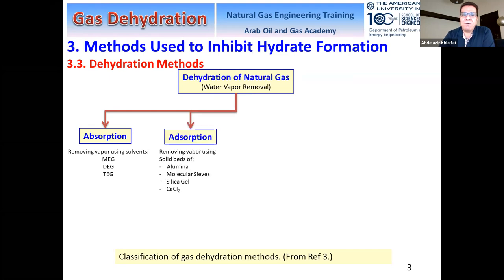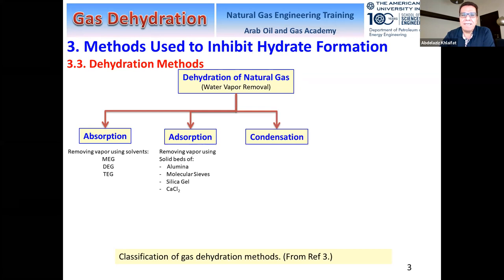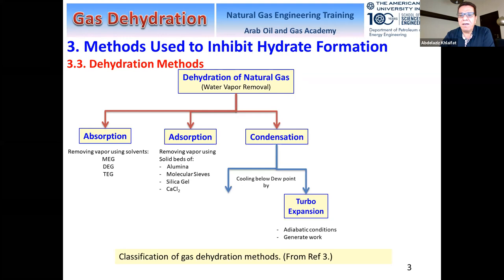The next method is adsorption, where water vapor is adsorbed by solid particles. This is a physical process, while absorption is chemical. Different adsorbents or desiccants are used, such as alumina, molecular sieves, silica gel, calcium chlorides, and others. The third method is condensation, where we condense water vapor by reduction in temperature. This can be done by turbo expansion or expansion valves — when gas expands, it cools down, and this process is carried out at adiabatic conditions, where heat transfer between the system and surroundings is zero.